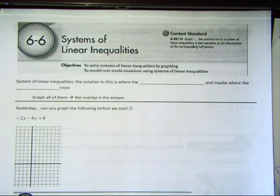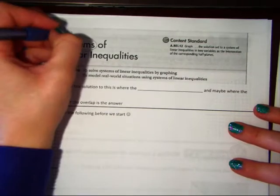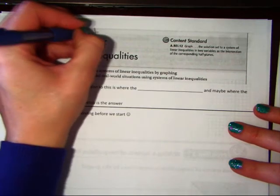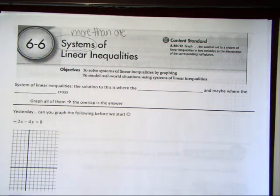Okay, so Systems of Linear Inequalities is a lot like Systems of Linear Equalities. You're going to have more than one. That's what it means to have a system. And remember, an inequality is greater than, less than, and so forth.